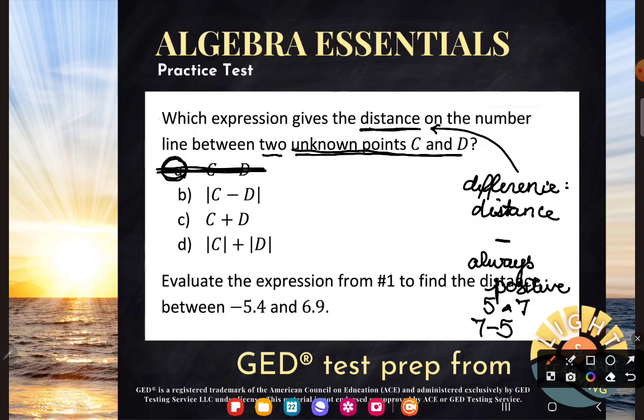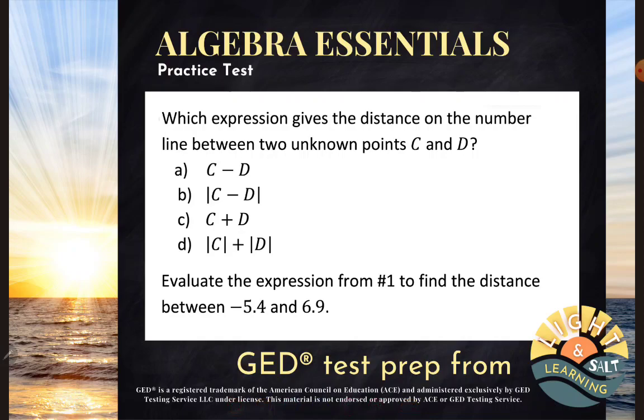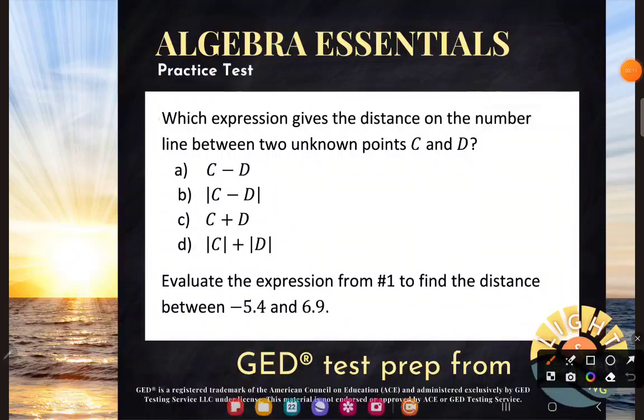And so that is not the best expression for this. We need something that says whatever answer we get should be positive. And those are absolute value bars. That's what absolute value bars say. We do whatever's in the inside, subtracting C minus D, and then whatever answer we get, that says make it positive. And so the correct selection here is B. The absolute value of C minus D would give us the distance or the difference. And again, don't be freaked out by those bars. They just mean make your answer positive. They represent a number's distance from zero. So they're always positive.